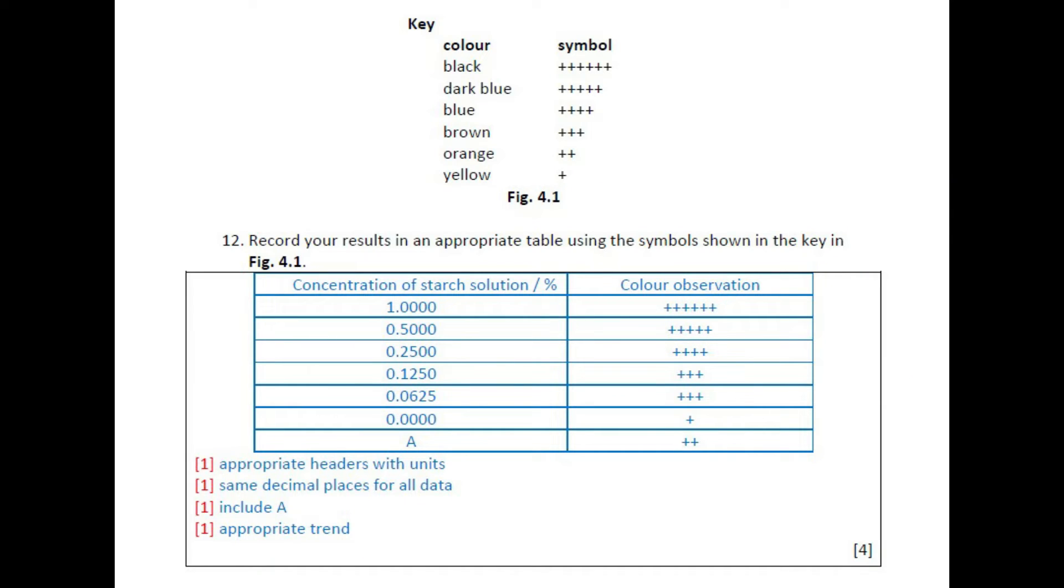In this table, the question has provided the key and symbols, so we will follow that. Now sometimes 1% doesn't actually show like a deep dark blue solution, because 1% is quite viscous, and could be kind of a murky or cloudy solution to begin with. So sometimes the blue may appear a little lighter. Now despite this, in your results table, you should always show an appropriate trend.